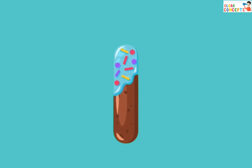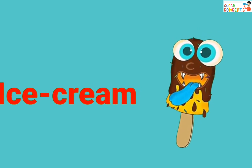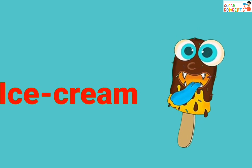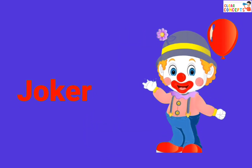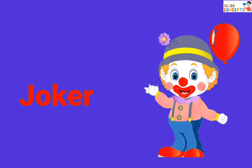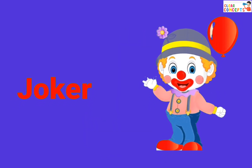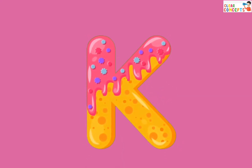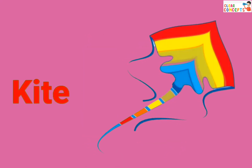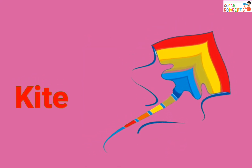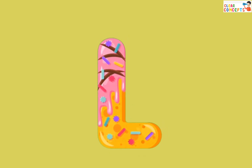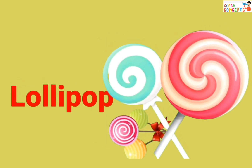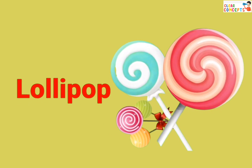I for ice cream. J for joker. K for kite. L for lollipop.